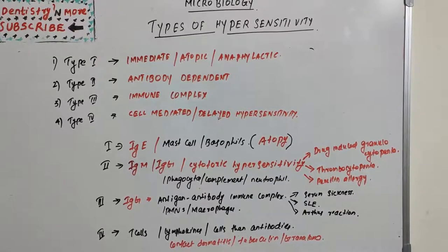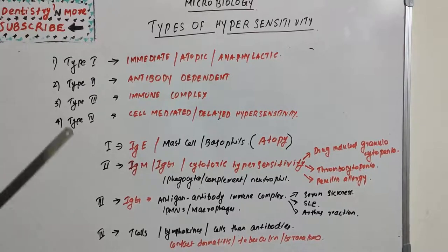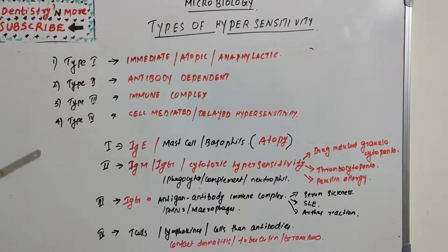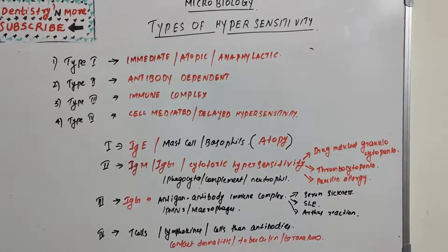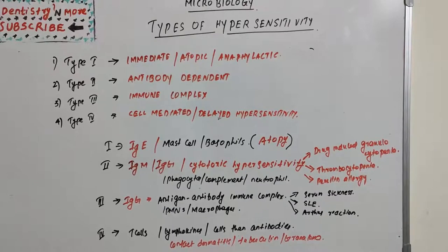Type 1 hypersensitivity is also known as immediate or anaphylactic hypersensitivity. The reaction may involve skin — urticaria and eczema — conjunctivitis in the eyes, rhinitis and rhinorrhea in the nasopharynx, and it can also lead to bronchopulmonary reactions like asthma and gastroenteritis in the gastrointestinal tract. These are all immediate outcomes of this antigen attack.